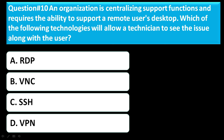Question number ten: An organization is centralizing support functions and requires the ability to support a remote user's desktop. Which of the following technologies will allow a technician to see the issues along with the user? Option A is RDP. Option B is VNC. Option C is SSH. Option D is VPN. The correct answer is option B, VNC.